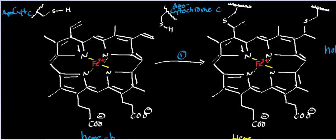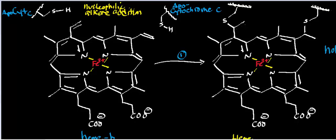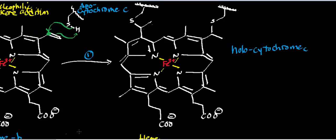The mechanism occurs in two steps: nucleophilic alkene additions. The pi electrons of the double bond on the vinyl group come out and abstract the proton from the thiol of cytochrome C's cysteine residue, causing nucleophilic attack on the vinyl carbon. The same thing happens for the other cysteine residue — the pi electrons from that vinyl group come out, abstract the proton, and in a concerted process those electrons attack the carbon.